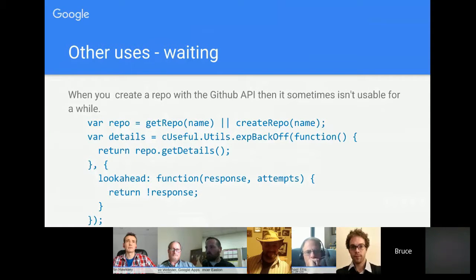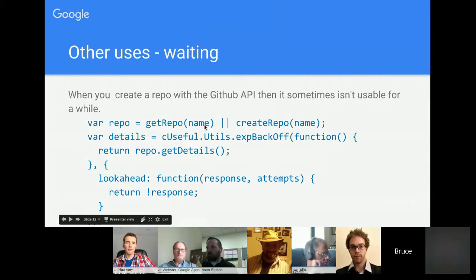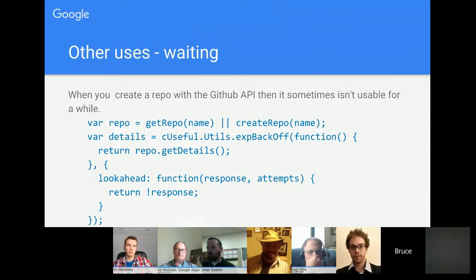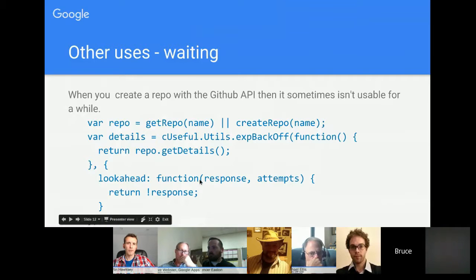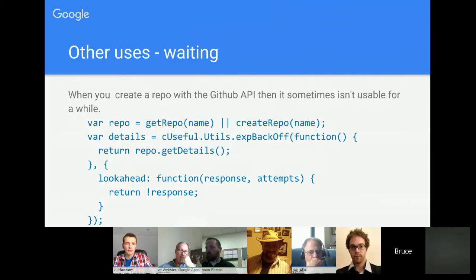Another use case is waiting for resources to become available. With the GitHub API, for example, you might create a repository and then immediately try to get its details — but the API hasn't registered the new repo yet. Even though creation succeeded, fetching details fails. A look-ahead function can detect the empty response and retry until GitHub catches up, handling this async propagation delay automatically.